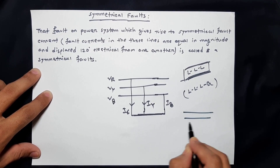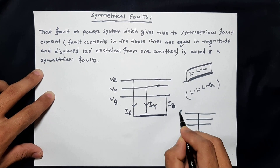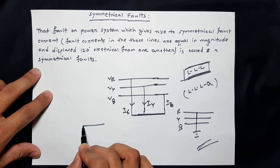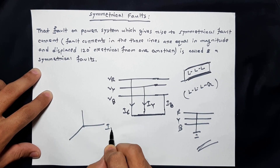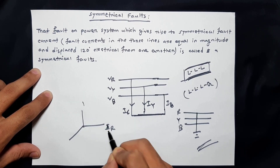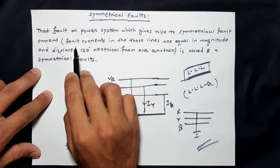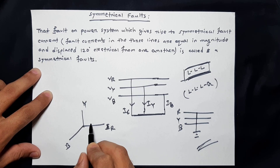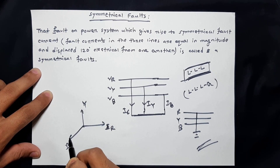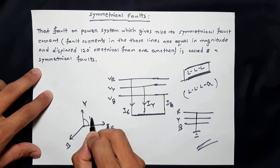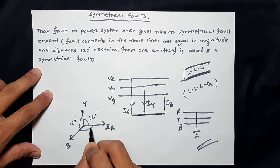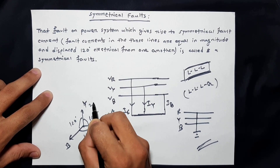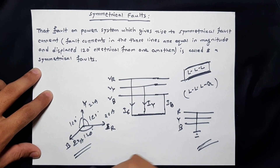When a symmetrical fault occurs, the fault current in the three lines — red, yellow, and blue — are equal in magnitude. That means the magnitude of fault current in all three lines will be the same. Additionally, the currents are displaced by 120 degrees electrically from each other — 120 degrees between each phase — making them symmetrical. For example, suppose in the red phase, 20 amperes of fault current flows; in the blue phase, 20 amperes; and in the yellow phase, 20 amperes — so the current is the same in all three. This is the concept of symmetrical fault current.